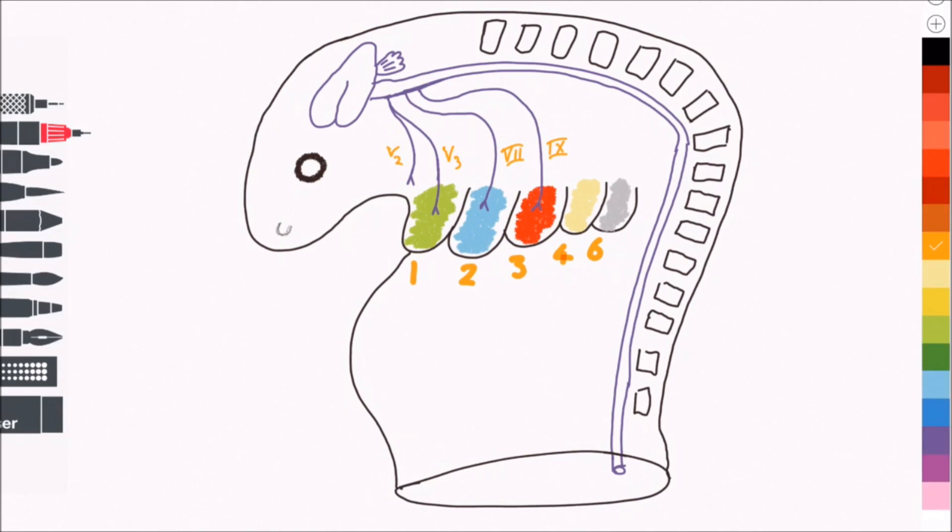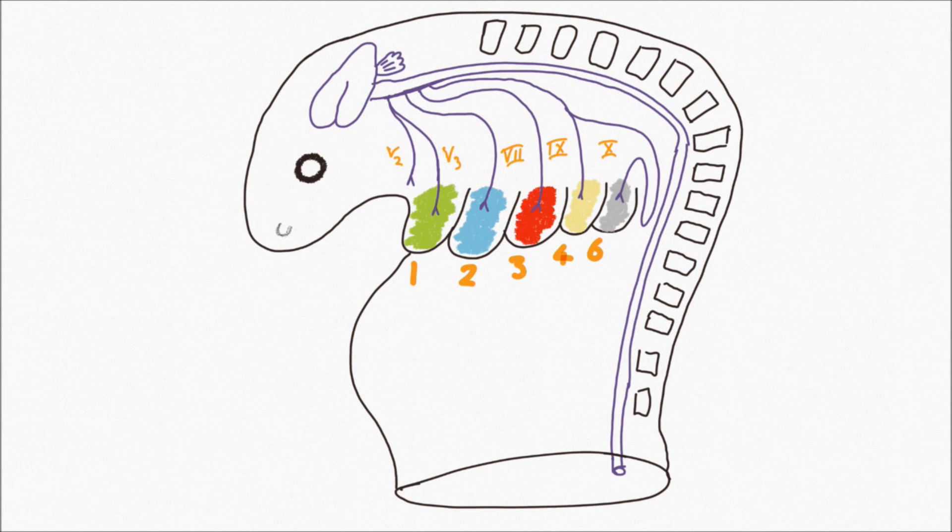The fourth pharyngeal arch is supplied by the vagus nerve. And the sixth pharyngeal arch is also supplied by a branch of the vagus nerve, which loops down into what will become the thorax, and then back up again. This of course will become the recurrent laryngeal nerve.